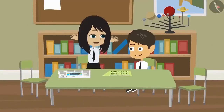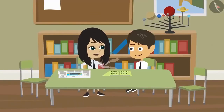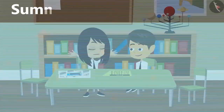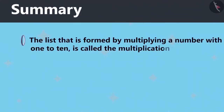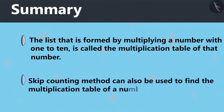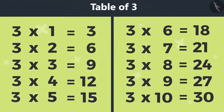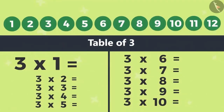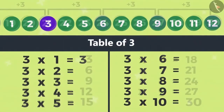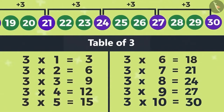This is very interesting. This way anyone can remember the multiplication of 3. Today we've learned that the list formed by multiplying a number with 1 to 10 is called the multiplication table of that number. And the skip counting method can also be used to find the multiplication table of a number, like what Vandana and Rayyanj did by writing every third number starting with 3.